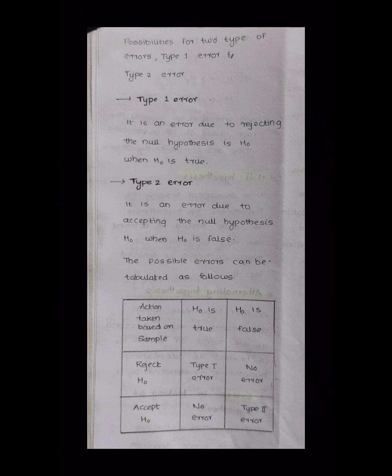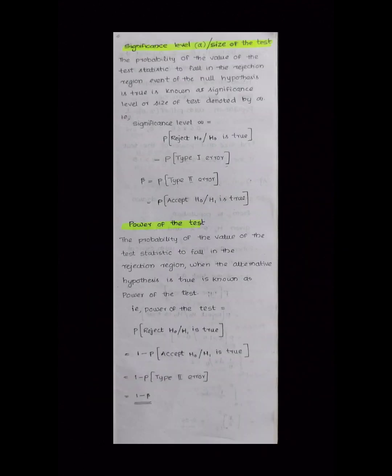Type 1 error is an error due to rejecting the null hypothesis H0 when H0 is true. Type 2 error is the error of not rejecting H0 when the alternative hypothesis H1 is true.